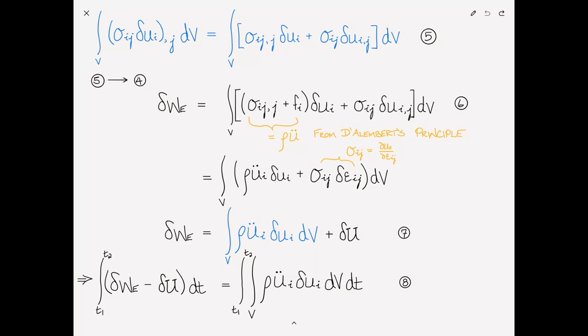In the case of the principle of minimum potential energy, we found that this was equal to 0, because the body was in equilibrium. Now, because the body is moving, instead of this equal to 0, it's equal to rho U double dot, which is the inertial load. In fact, it's the inertial load per unit volume. So, as a result, when we work our way through the math and down the page, what we end up with is in equation 8, the right-hand side, instead of it being equal to 0, as we saw for the static case, now it's equal to some sort of an MA type term.